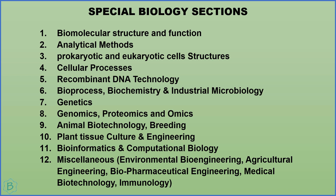Part B covers questions related to specialized sections of biology, which I have divided into 12 major topics. The first is biomolecular structure and function — protein structure including alpha helices, beta sheets, secondary structures, domains, transcription factors, amino acid properties such as polar and non-polar, and the Ramachandran plot. The second is analytical methods, including X-ray crystallography, chromatography, scanning electron microscopy, transmission electron microscopy, and fluorescence microscopy.